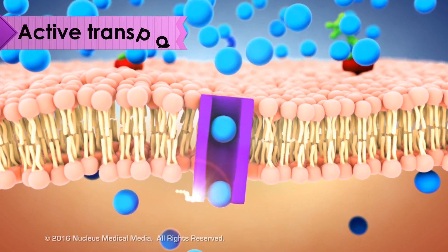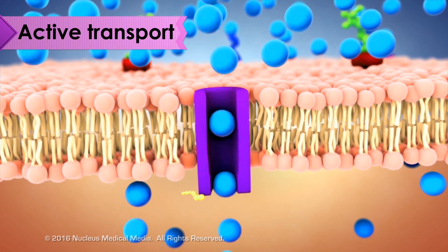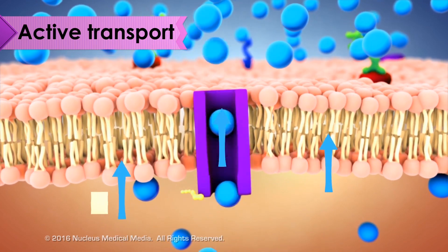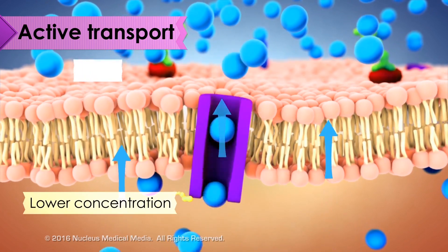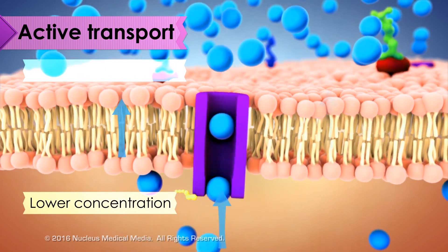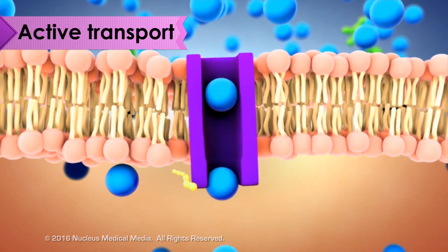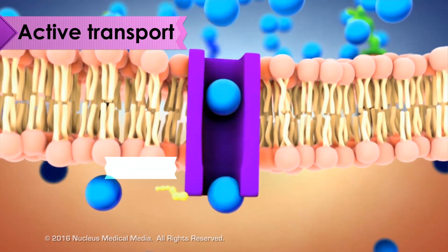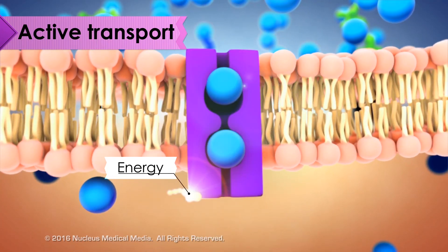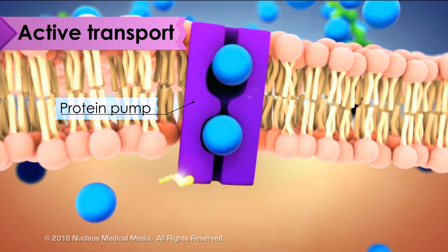The second category of cell transport is active transport. This is when particles move from an area of lower concentration to an area of higher concentration. When particles move against the concentration gradient, energy is required, often to allow protein pumps to assist in particle movement.